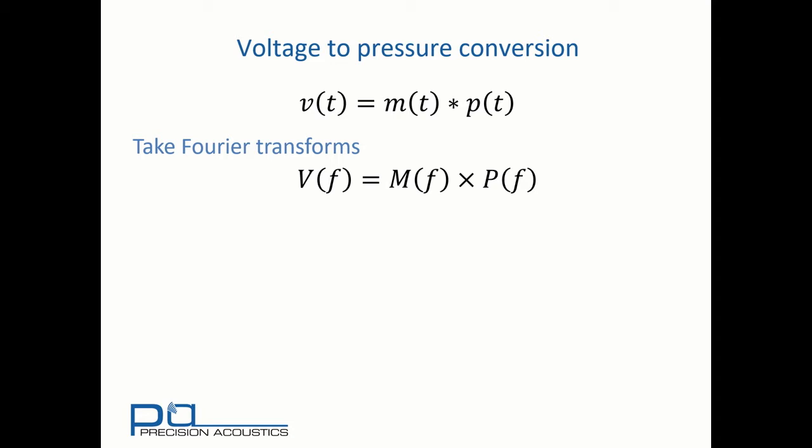One advantage of the Fourier transform is that it allows us to replace a time domain convolution with multiplication in the frequency domain. Therefore, to extract the pressure spectrum, we simply need to take the ratio of the voltage spectrum and the sensitivity spectrum.